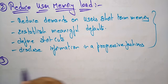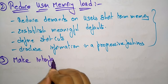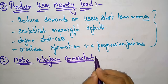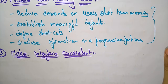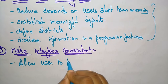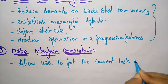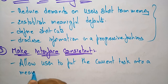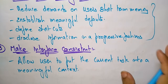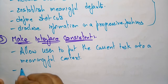Now coming to the third golden rule of user interface: 'make the interface consistent.' How can you make the interface consistent to achieve good user interface? First, allow users to put the current task into a meaningful context. Also, maintain consistency across a family of applications — in all applications we have to maintain consistency.